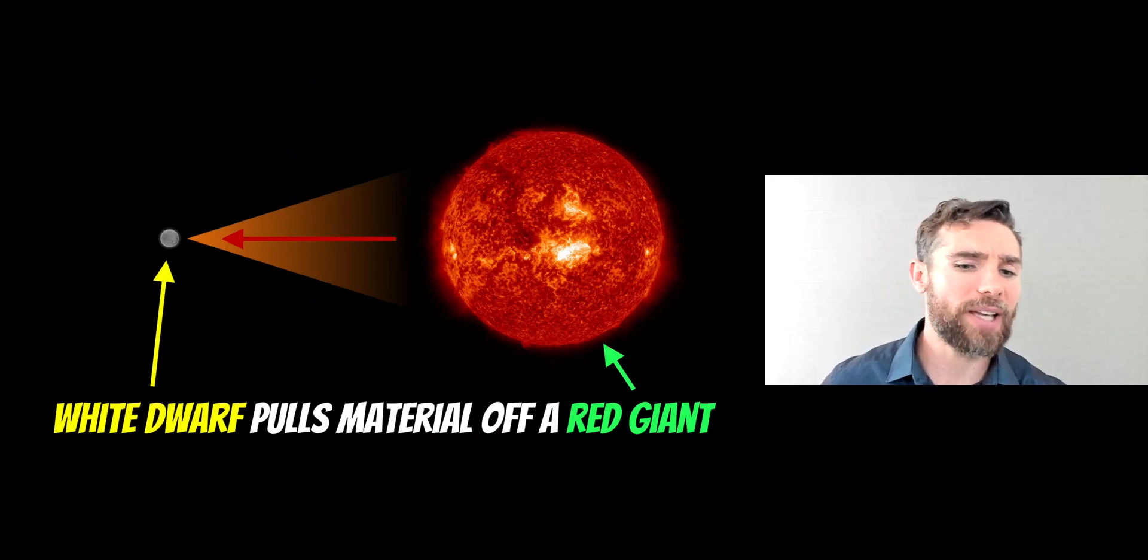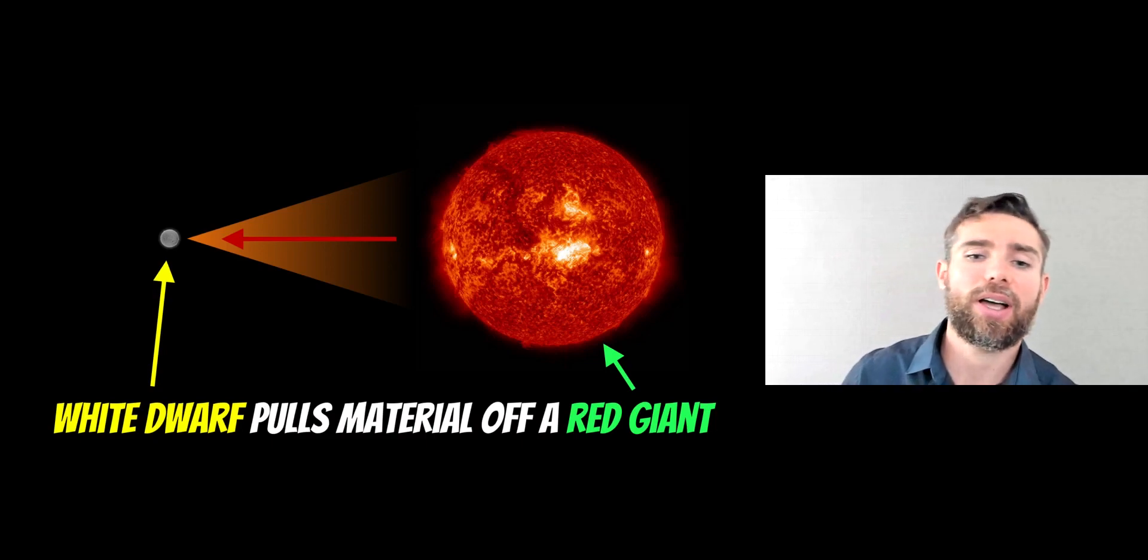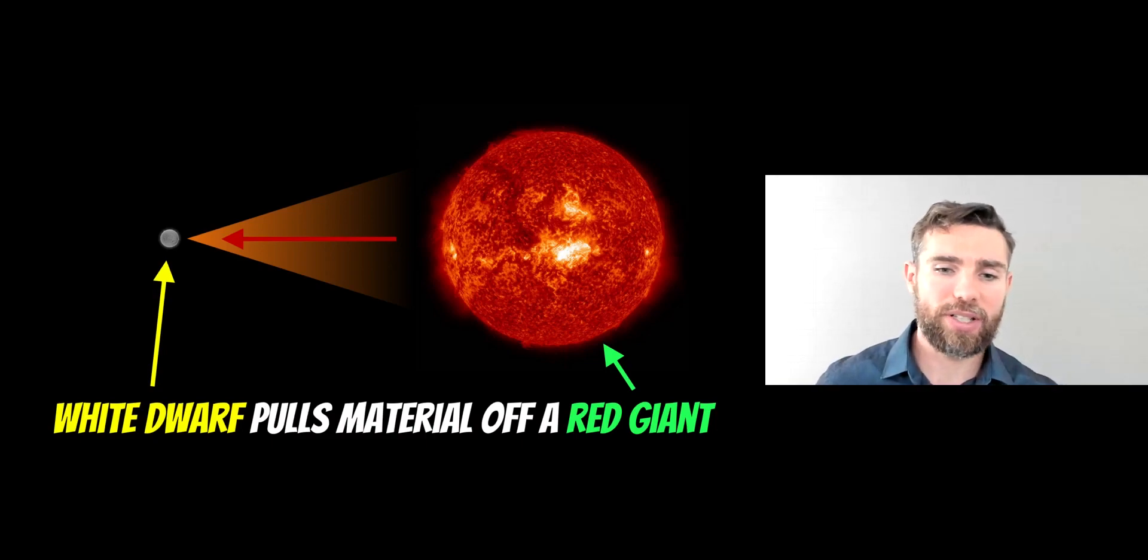What's happening here is that you have a white dwarf star and a red giant star. The white dwarf star basically pulls material off the larger red giant and it grows. Once it hits a certain mass, which is about 1.4 solar masses, then it basically goes into a supernova.